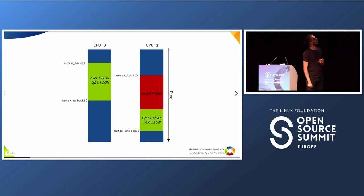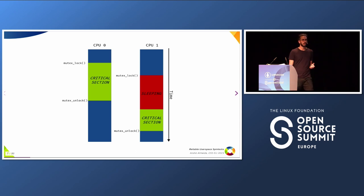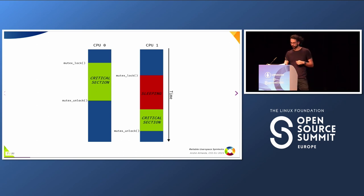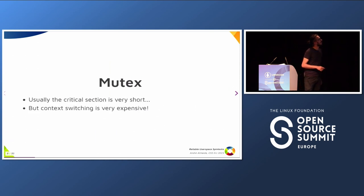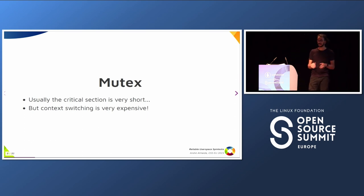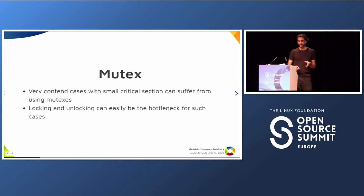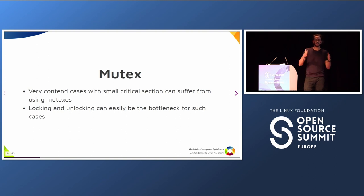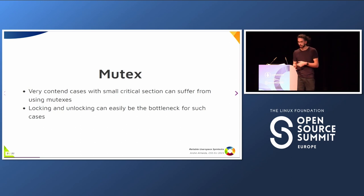Let's say we have two CPUs. CPU 0 gets the lock and does the work on the critical section. CPU 1 does a context switch, goes to sleep, waiting for the lock to be free, so it can finally take the lock, work on the critical section, and free the lock. But there's a problem here, because usually the critical section is very short. Doing a context switch nowadays, after the CPU vulnerabilities, is very, very expensive. If you want to move from user land to the kernel and back, this can take a lot of time.